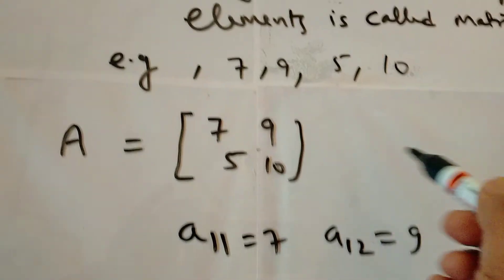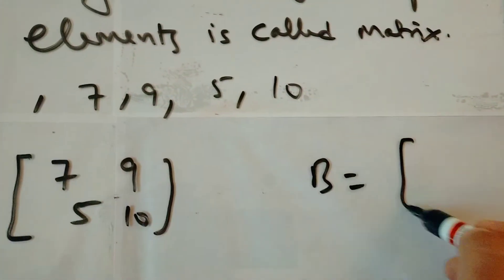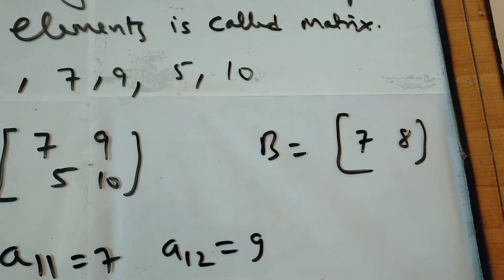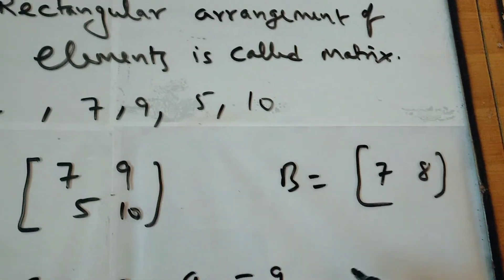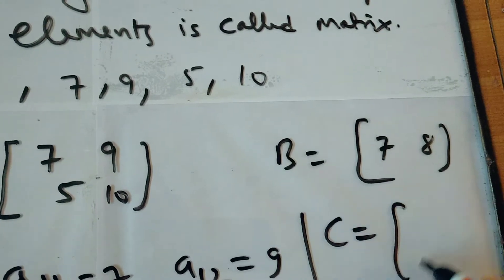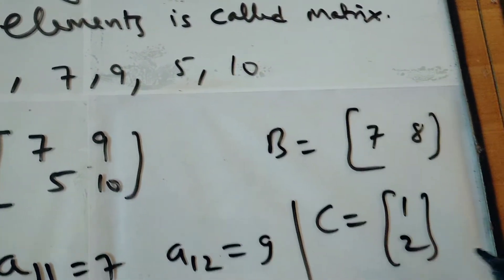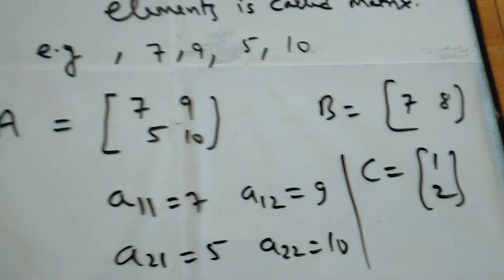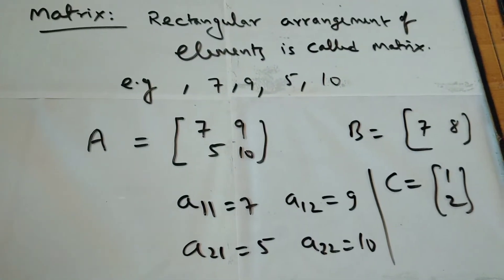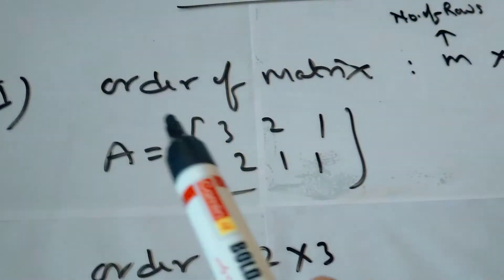This is the introduction of a matrix. A matrix can have one row also — for example, a matrix with elements seven and eight in a single row. Or a matrix can have only one column. These are the different formats of a matrix. Now our next topic is the order of a matrix.